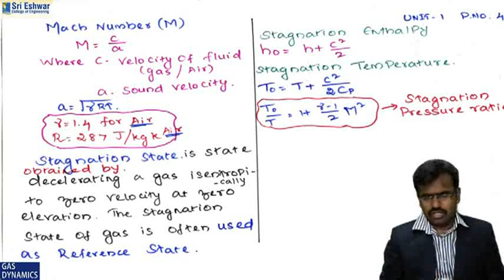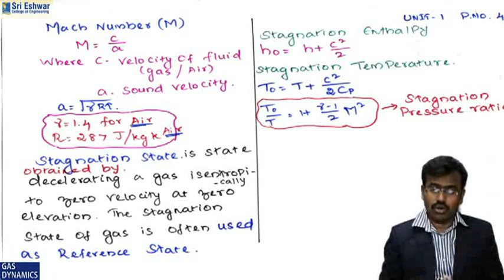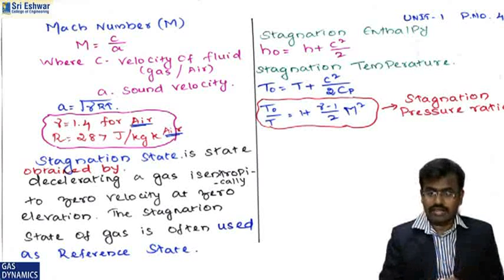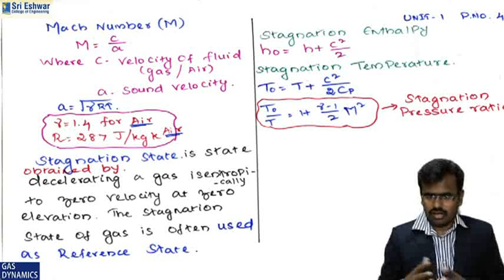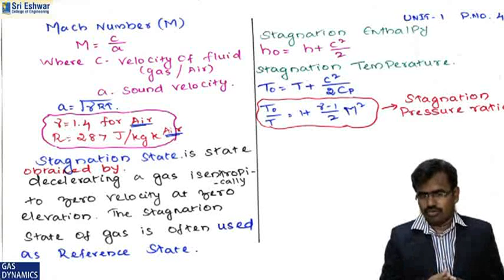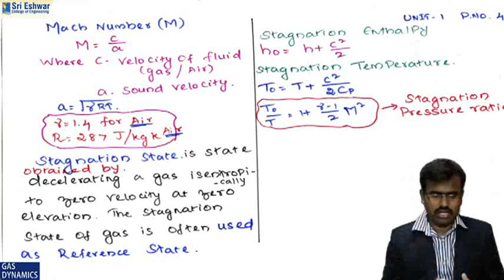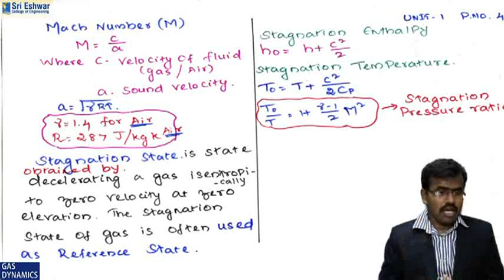The stagnation state is obtained by decelerating a gas isentropically to zero velocity at zero elevation; it is often used as a reference state. The stagnation enthalpy is given by h₀ = h + c²/2. The stagnation temperature ratio from gas tables is: T₀/T = 1 + (γ−1)/2 · M².